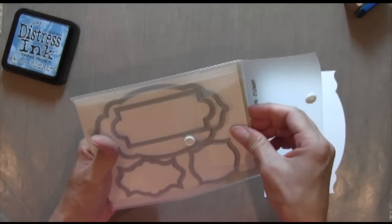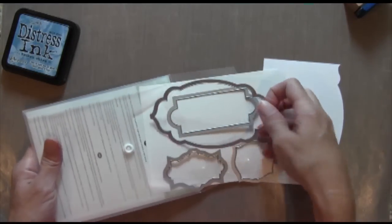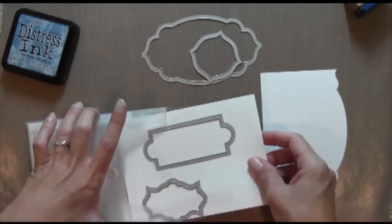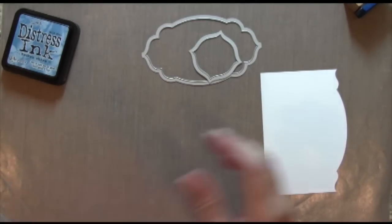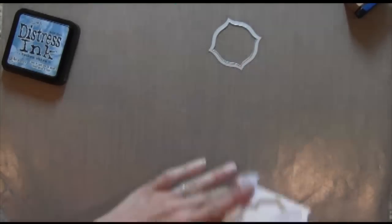Alright, I slowed this down. These are some new Framelits from Stampin' Up! They're so cool, I love them. There's a bunch of stamp sets that go with it. I don't even have any of the stamp sets that go with it. So I'm just using them as die cuts and they're really pretty. And they also come with a template of paper piercing holes, and I'll show you that in a second.